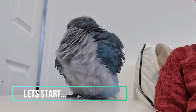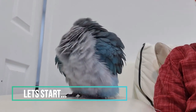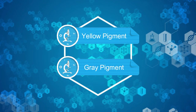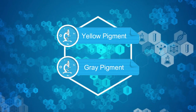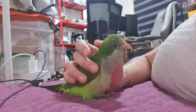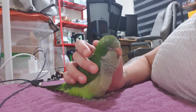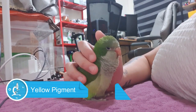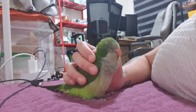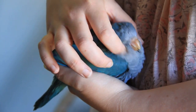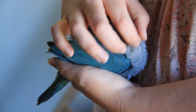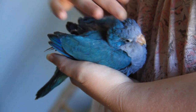The plumage color in parrots like quakers is produced by three elements: yellow pigments, grey pigments, and structural color which produces blue. Green in quakers is a combination of yellow pigments and the blue structural color. The blue quaker has a mutation which removes yellow pigments, while lutino and yellow quaker has a mutation which removes the blue structural color.